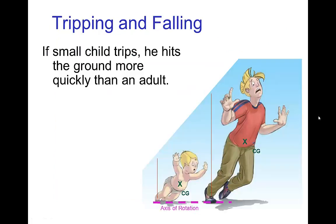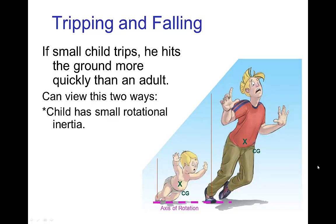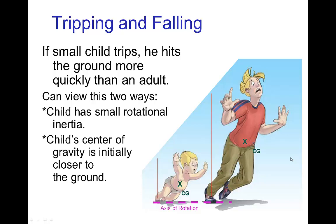Same sort of phenomenon happens when a character trips and falls. The tall character, the adult would take more time than the short character. Two ways of viewing this: you can either think of the child as having a small rotational inertia, so it's going to tip over quicker. You can also think of the fact that the child's center of gravity is initially closer to the ground, and so it takes less time for it to reach the ground.